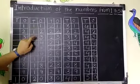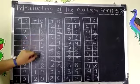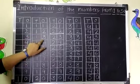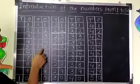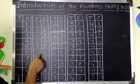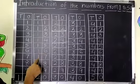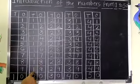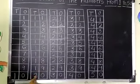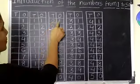1, 1, 11. 1, 2, 12. 1, 3, 13. 1, 4, 14. 1, 5, 15. 1, 6, 16. 1, 7, 17. 1, 8, 18. 1, 9, 19. 2, 0, 20.